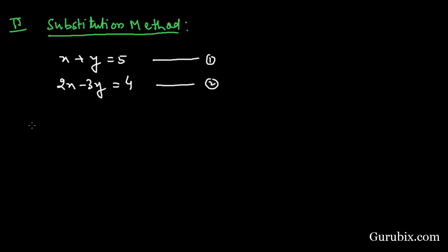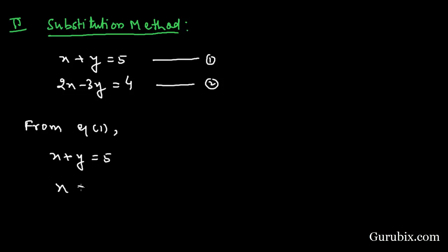We shall start with equation 1: x + y = 5. From equation 1, we write the value of x in terms of y, which gives x = 5 - y. Now we shall substitute this value of x into equation 2.